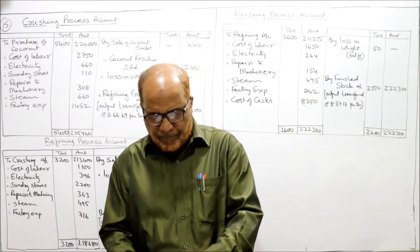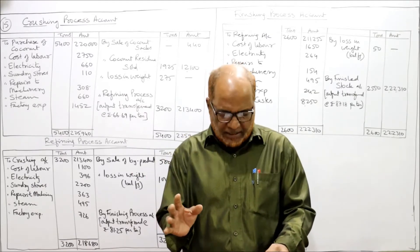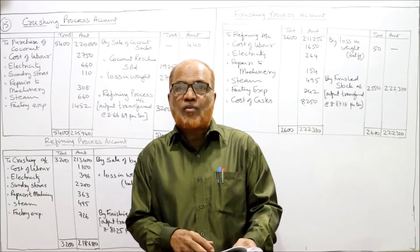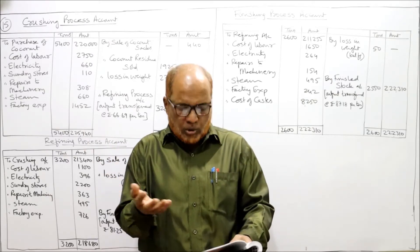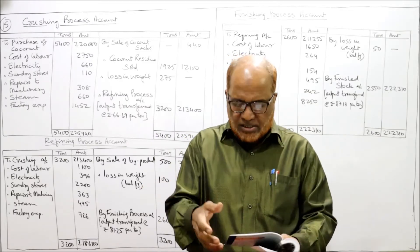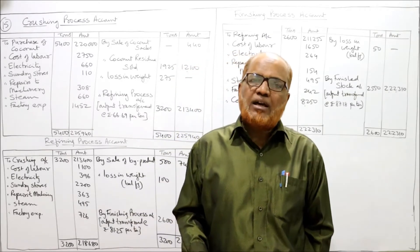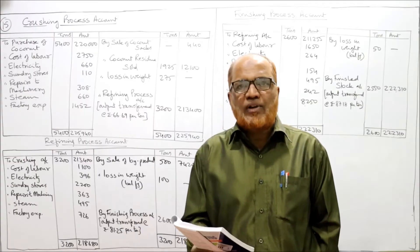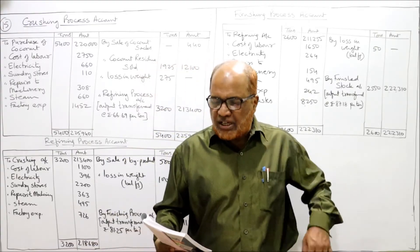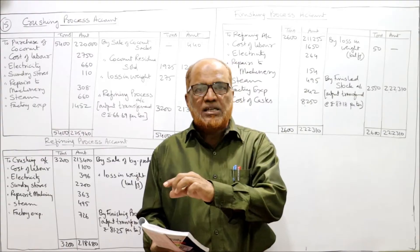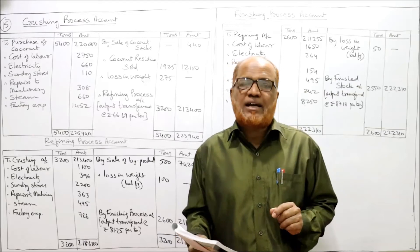The following details are extracted from the cost records of an oil mill for the year ended 31st March 1982. Purchase of 5400 tons of coconut for rupees 2 lakh 20 thousand. There are three processes: crushing, refining, and finishing. Data is given for cost of labour, electricity, sundry stores, repairs to machinery, steam, factory expenses, and cost of casks for all three processes — all taken on the debit side of the process account.